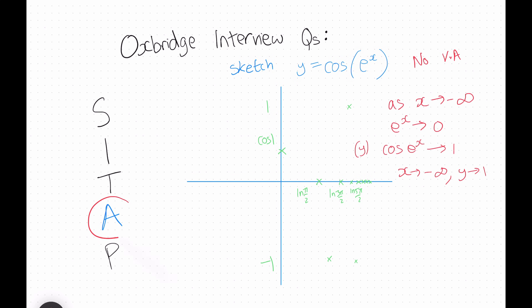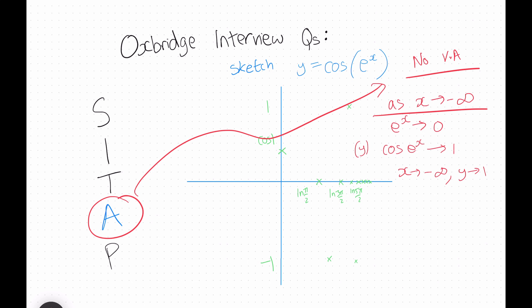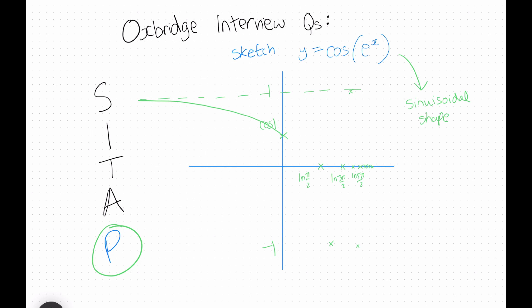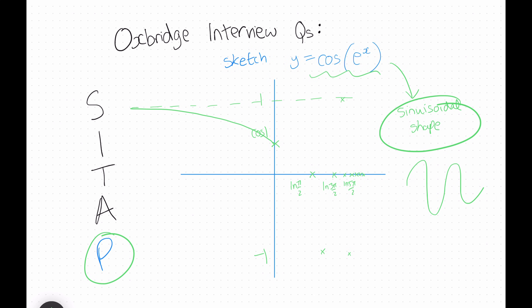For asymptotes, there are no vertical asymptotes, but there is a horizontal one: as x tends to minus infinity, e^x tends to 0, so cos(e^x) tends to cos(0) which is 1. So as x tends to minus infinity, y tends to 1, and the function gets closer and closer to the horizontal line at y equals 1. Finally, for pattern, this function has a sinusoidal shape, so we connect the dots aiming for that shape. As x tends to infinity, the function gets more and more bunched up.